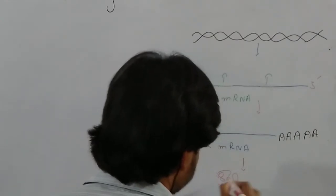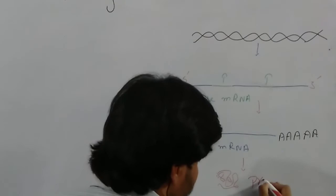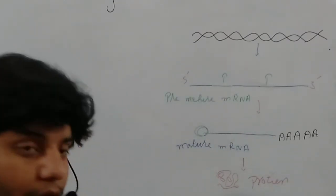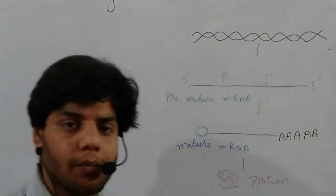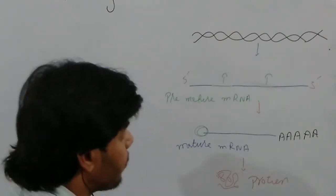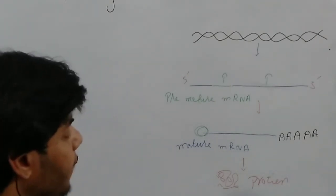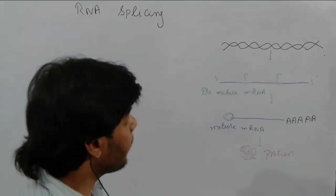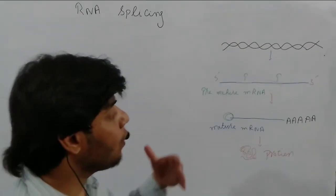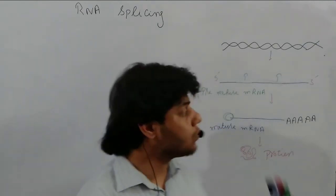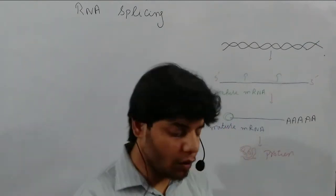The mature mRNA is now ready for protein synthesis. After that, protein will be synthesized — as you can see, this is a protein structure — and this process is called translation. We will discuss it in detail in our upcoming video lectures. This is the concept behind splicing.